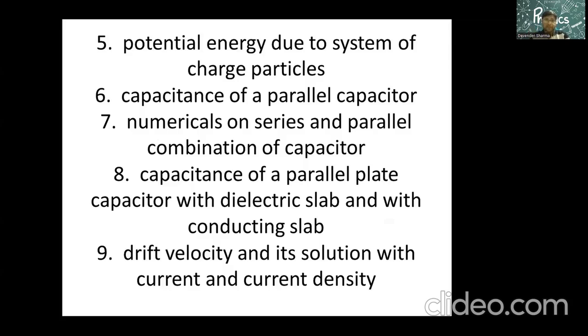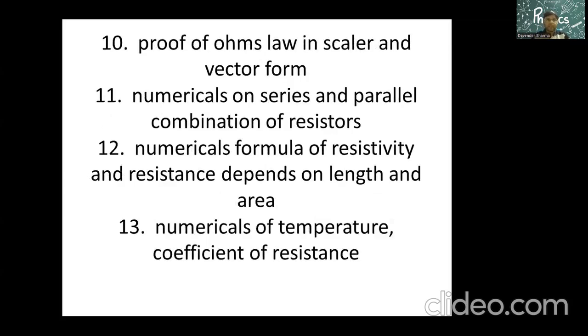Unit number two: drift velocity expression, its solution and its relation with the current and current density, i is equal to vena and other factors also. Then proof of Ohm's law v is equal to ir and its vector form also, j is equal to sigma e. Of course the mobility, numericals on series and parallel combination, very important numericals based on the formula of resistivity r is equal to rho l by a, length and area changes, then how the things will going to happen.